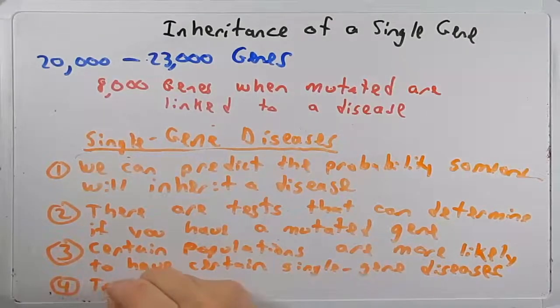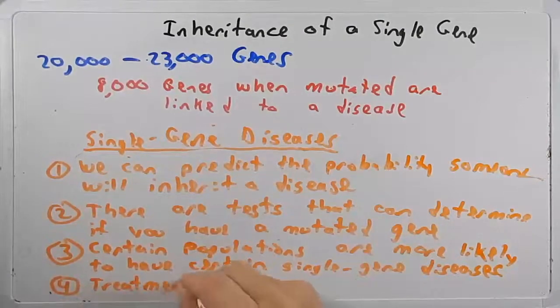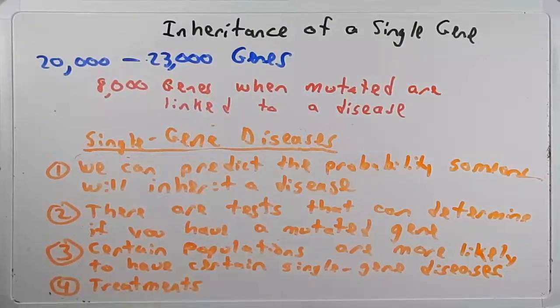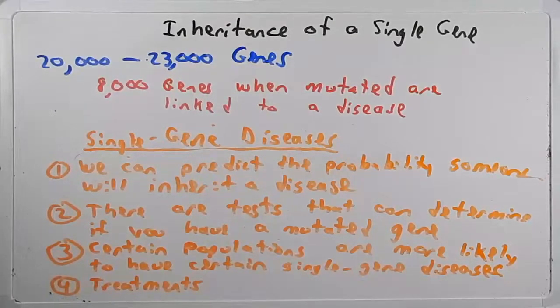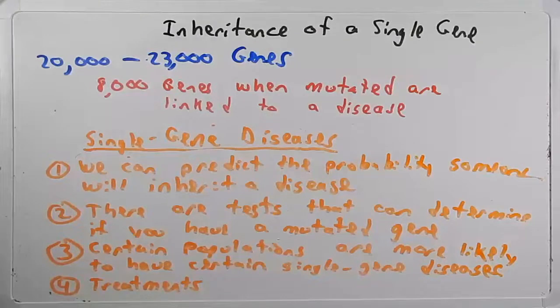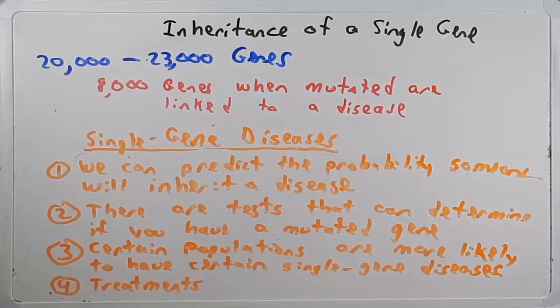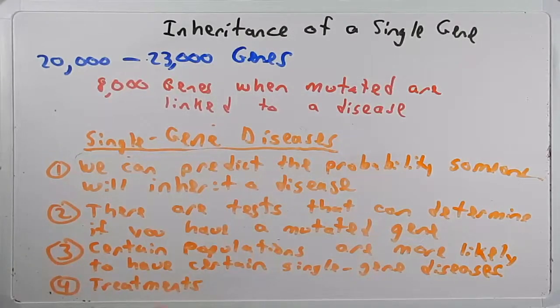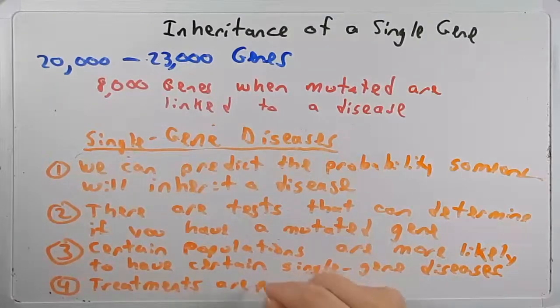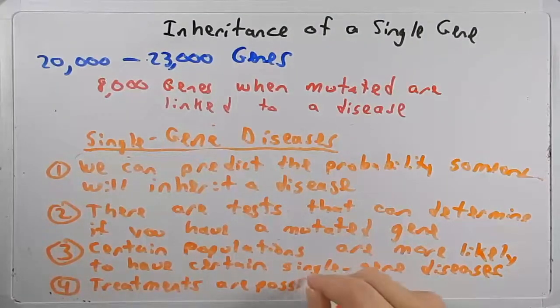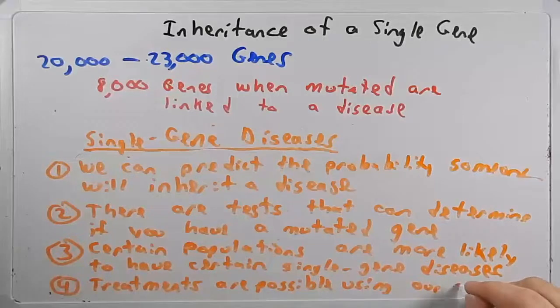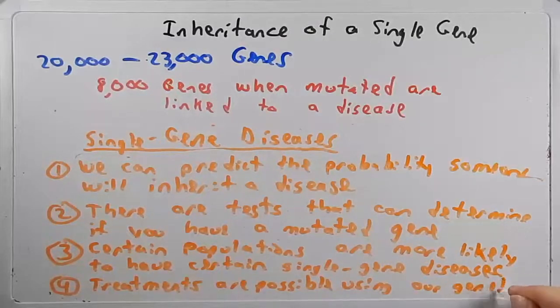The last thing I want to point here is that because we understand single gene diseases a little bit better, it offers some possible treatments. For instance, if we know a particular gene when it's mutated leads to a disease, then perhaps by giving the person the product of that gene, say the protein, then that might offer an effective treatment. So treatments are possible using our genetic knowledge.